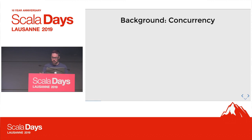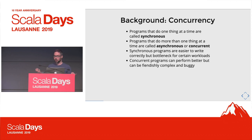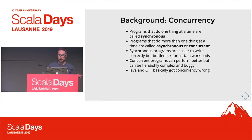Let's talk about concurrency. Programs that do one thing at a time we'll call synchronous, and programs that do more than one thing at a time we can call asynchronous or concurrent. Synchronous programs are generally easier to write, but they do bottleneck or block on certain workloads. Whereas concurrent programs can perform better, but also can be fiendishly complex and buggy.